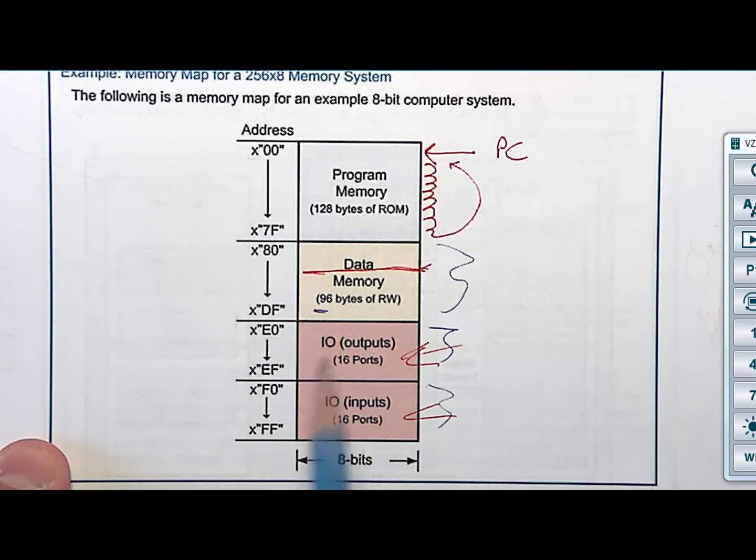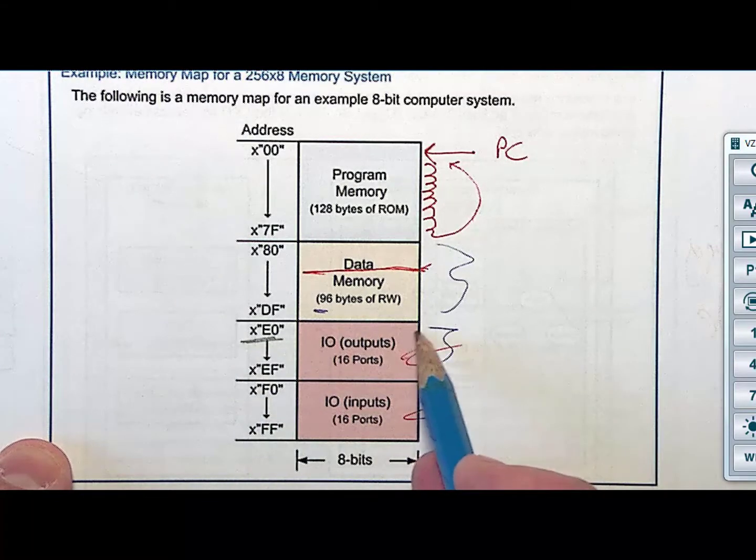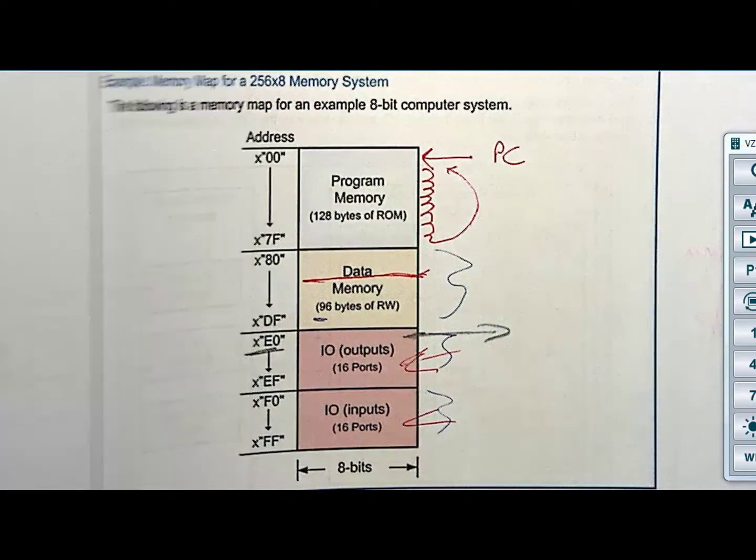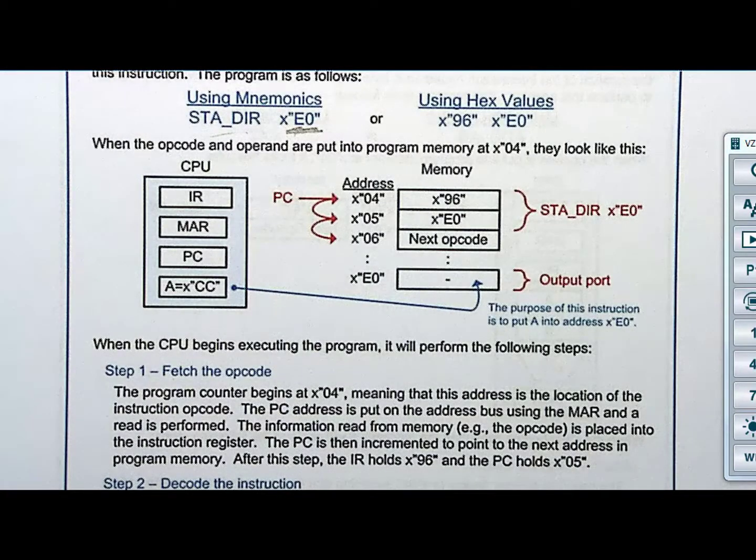It turns out that we have mapped our output ports to E0. So we are going to have this as an output port, which is driving to some pins. Maybe you hook your pins to the LEDs. I don't know. Whatever you want to do. But we are writing to an output port. Oh my God. I didn't mean to say writing. I meant to say storing.